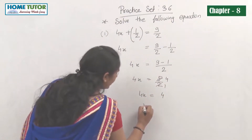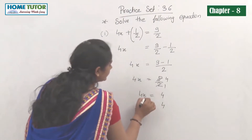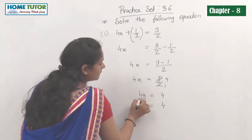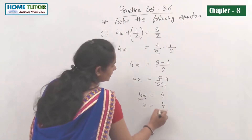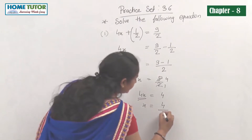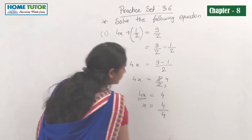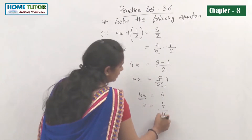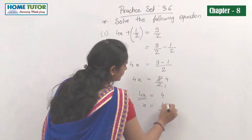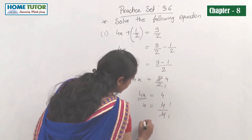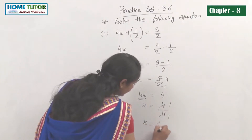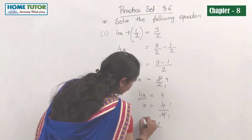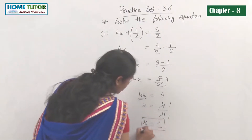Now x equals 4. Since 4 is multiplied by x, it comes to the other side and becomes division. So x equals 4 divided by 4, which equals 1. The value of x is 1.